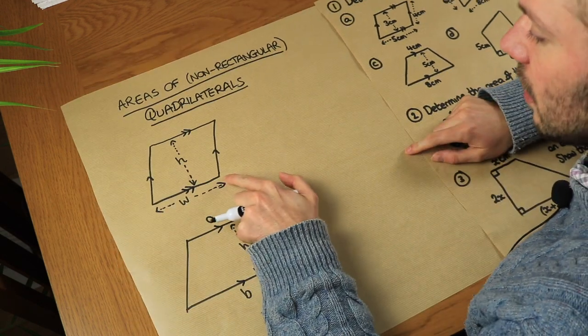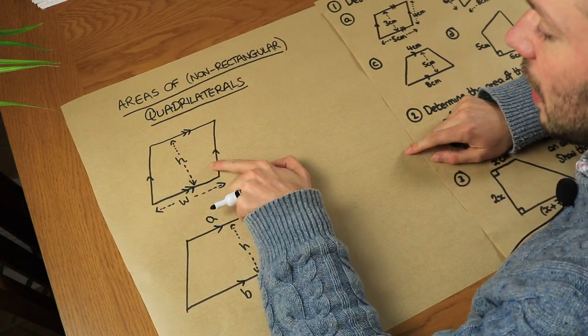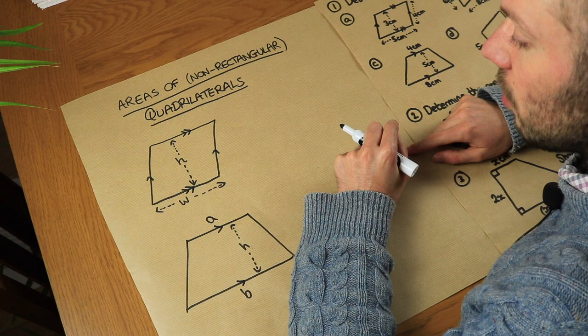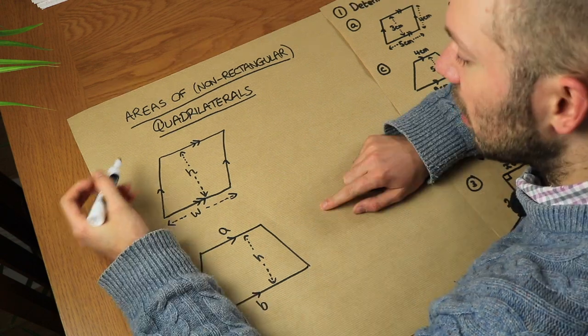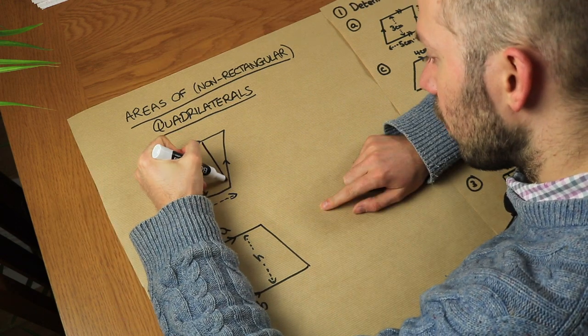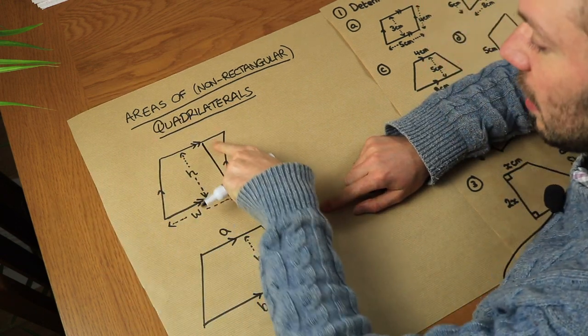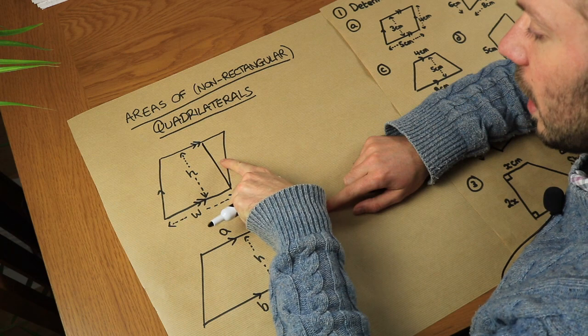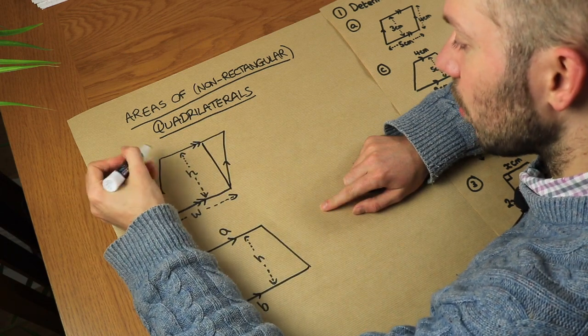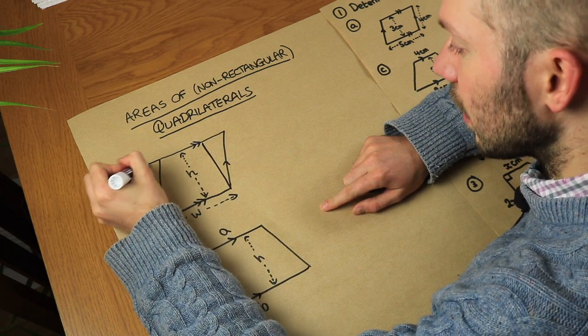Now let's say we wanted to find the area of this parallelogram here. What we could do is cut off this triangle here and then stick it on the other side.